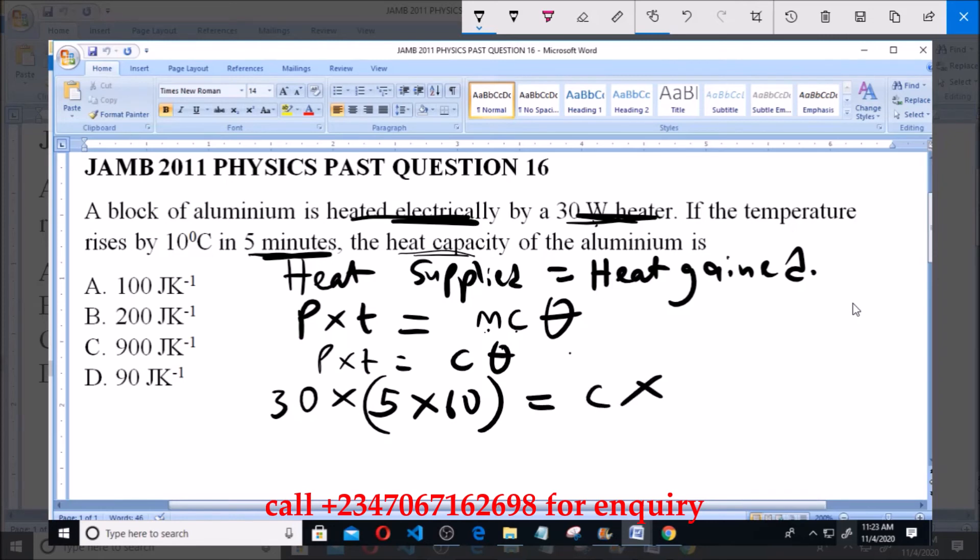So equal to C, the heat capacity which you are looking for, multiplied by the heat gain, which is 10 degrees Celsius. So C is equal to 30 times 5 times 60 divided by 10.